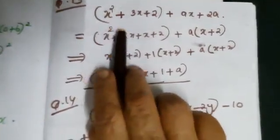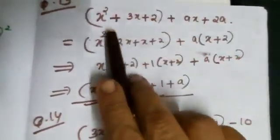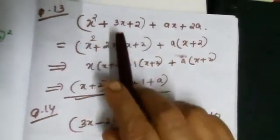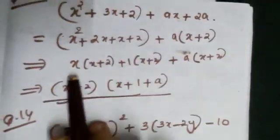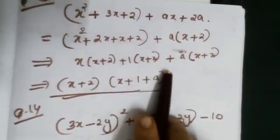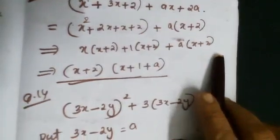Question No. 13: x²+3x+2+ax+2a. So this is split up into x²+2x+x+2. That is, x(x+2)+1(x+2), plus here take a outside: a(x+2).